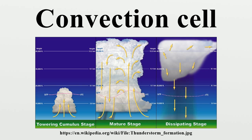A rising body of fluid typically loses heat when it encounters a cold surface, when it exchanges heat with colder liquid through direct exchange, or in the example of the earth's atmosphere, when it radiates heat. At some point the fluid becomes denser than the fluid beneath it, which is still rising. Since it cannot descend through the rising fluid, it moves to one side. At some distance, its downward force overcomes the rising force beneath it.